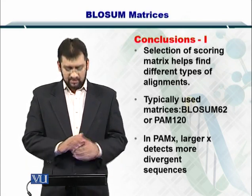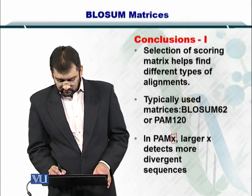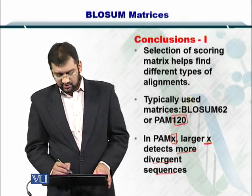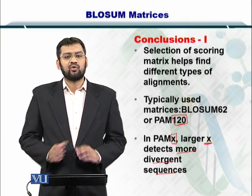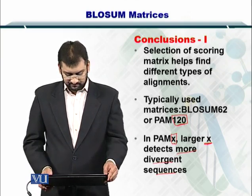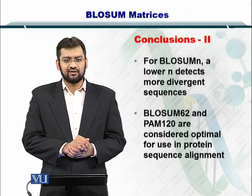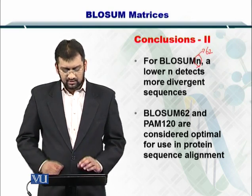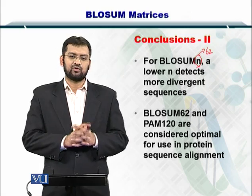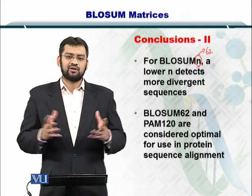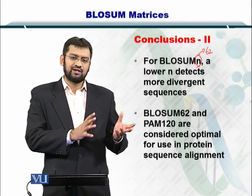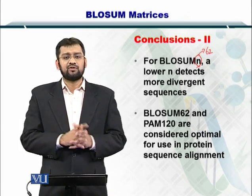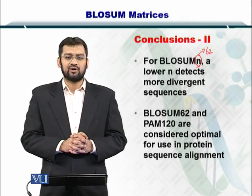Note that in PAM X, a larger X detects more divergent sequences, so PAM 120 has very good resolution compared to PAM 100. However, for BLOSSOM N — where we discussed N equal to 62 — a lower N detects more divergent sequences. So BLOSSOM 50 is able to consider much more diversity, while BLOSSOM 72 or 80 will not cater for as much diversity. As mentioned, BLOSSOM 62 and PAM 120 are typically used in sequence alignment scoring systems.